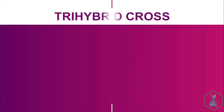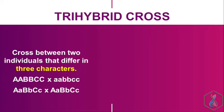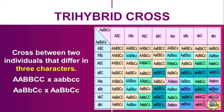What is a trihybrid cross? A trihybrid cross is a cross between two individuals that differ in three characters, and the individuals must be homozygous or heterozygous at all three loci. If we are considering four characters, it is a tetrahybrid cross; if five characters, it is a pentahybrid cross; and if the cross involves many characters, it is termed a polyhybrid cross.